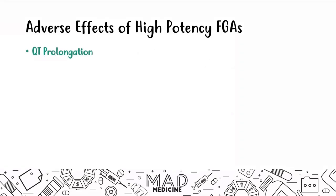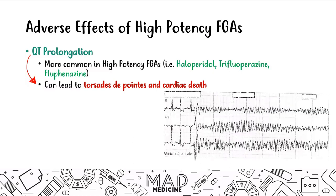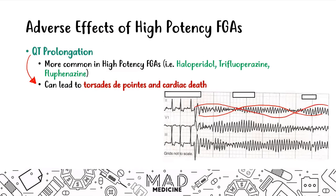These drugs can also affect the heart by causing QT prolongation, more common with high-potency first-gen drugs. QT prolongation can lead to torsades de pointes — an irregular cardiac rhythm showing alternating increases and decreases in the amplitude of the cardiac action potential. This is most commonly caused by haloperidol at high doses, so if a patient on haloperidol shows QT prolongation, watch for torsades de pointes and risk of cardiac death.